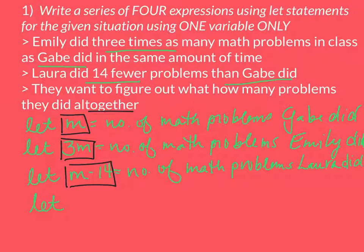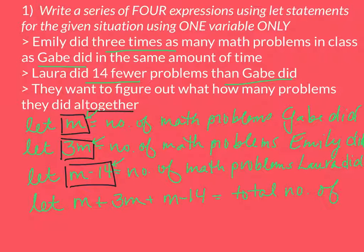So I'm going to have M, that's how many Gabe did, plus 3M, that's how many Emily did, plus M minus 14, because that's how many Laura did. And that's going to equal the total number of math problems.